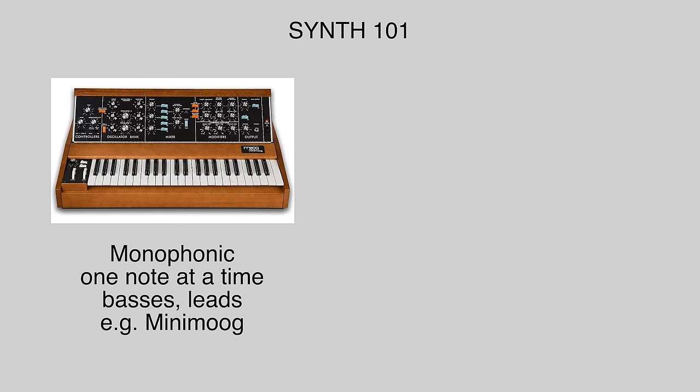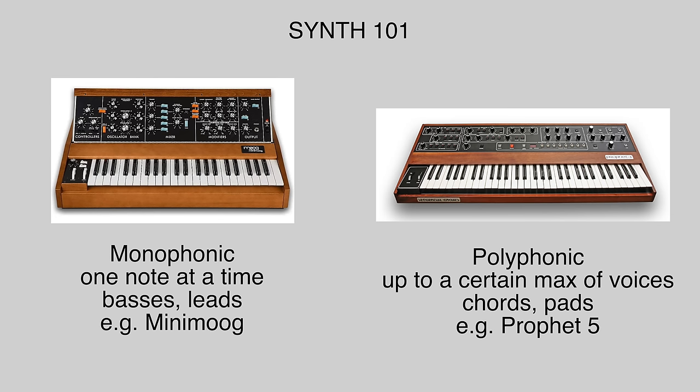Here's my shortened synthesizer 101 so that those less familiar can follow along. There are two big categories of synthesizer: monophonic, in which only one note can be played at a time, and polyphonic, in which multiple notes — up to a certain limit, 16 in the case of the Prophet Rev 2 — can be played simultaneously, similar to how you might play a piano.